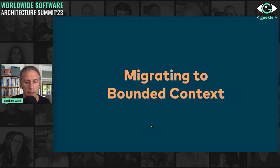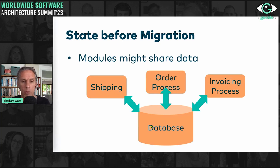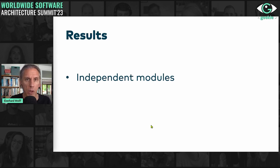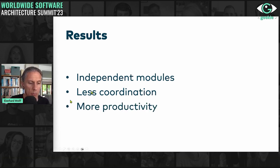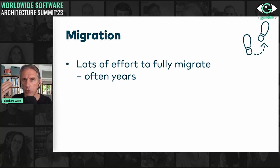Migrating to bounded contexts is interesting because before migration, we often have a shared database with lots of shared data between different functionalities. We want to end up with separated databases and separated models because they are much easier to change. If we achieve that, we have independent modules, less coordination, and probably more productivity. However, this is a lot of effort — oftentimes years. If you built a system over 10 years, migrating it to bounded contexts will be the same order of magnitude.